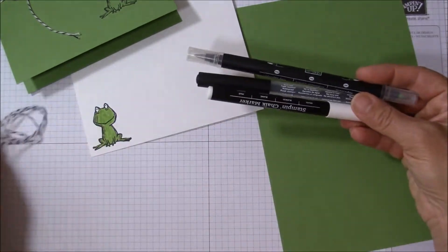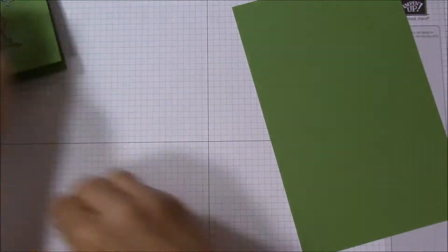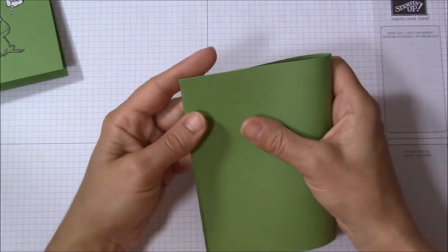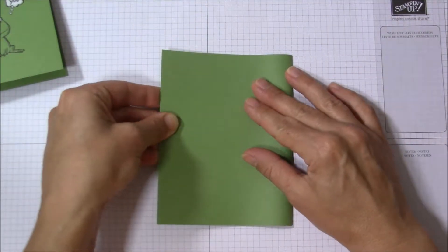Okay, so let's go ahead and get started. Let's fold the wild wasabi base in half at the score line.